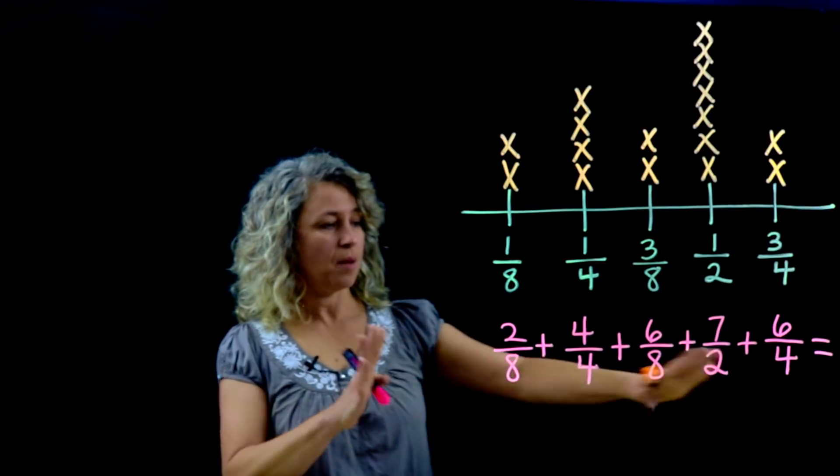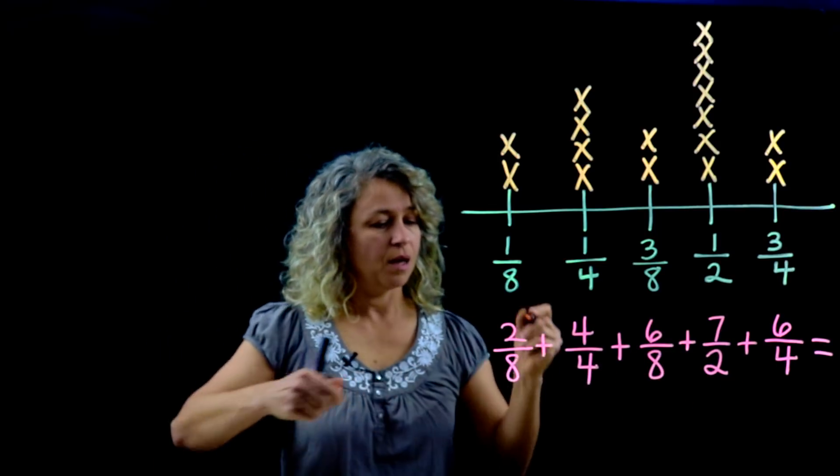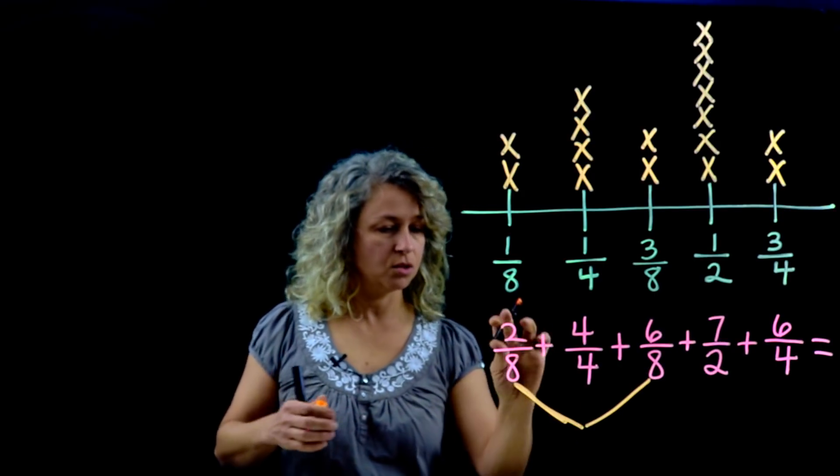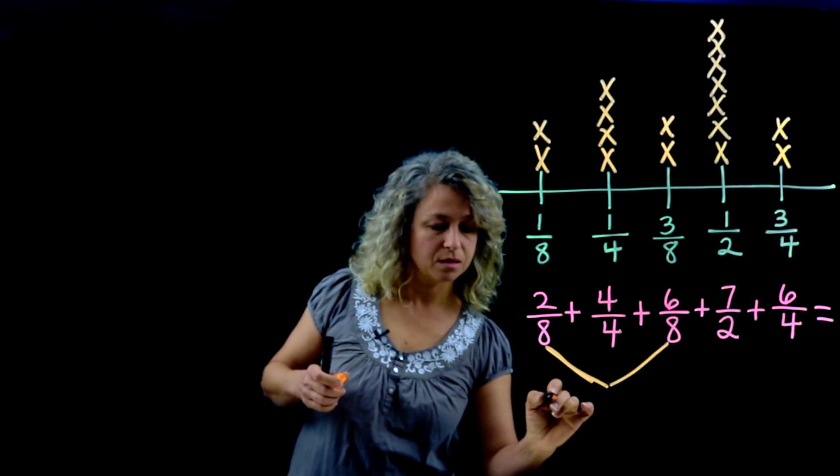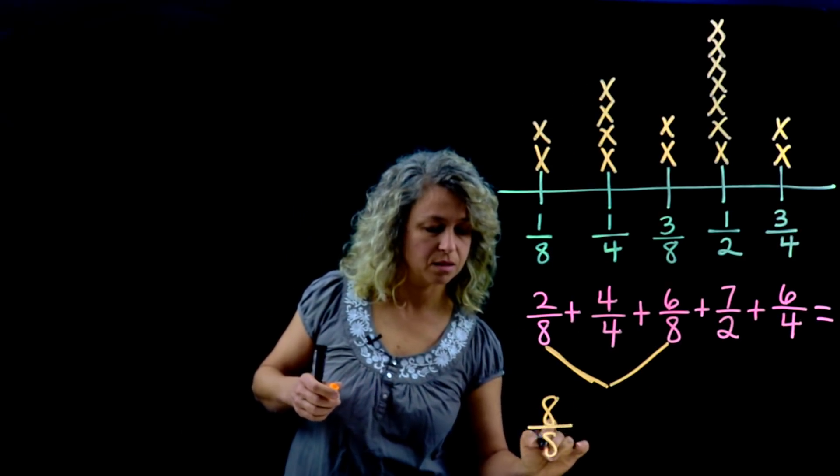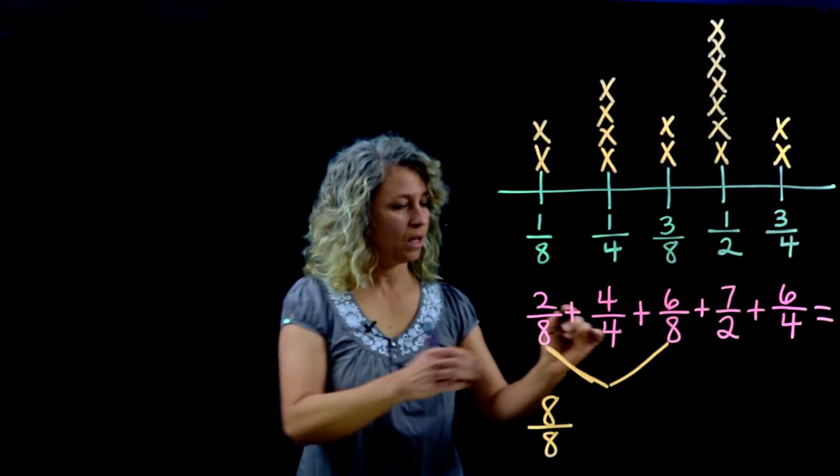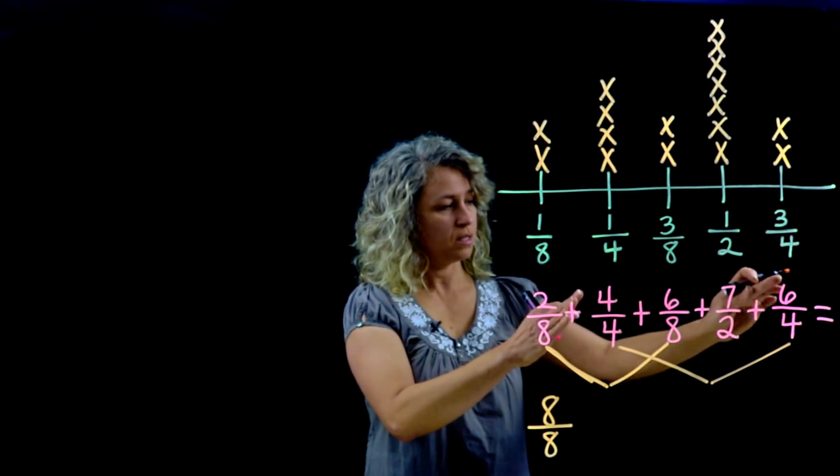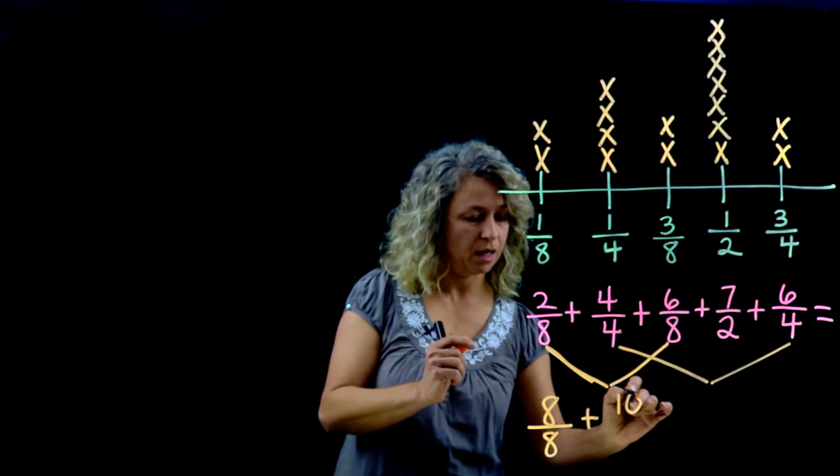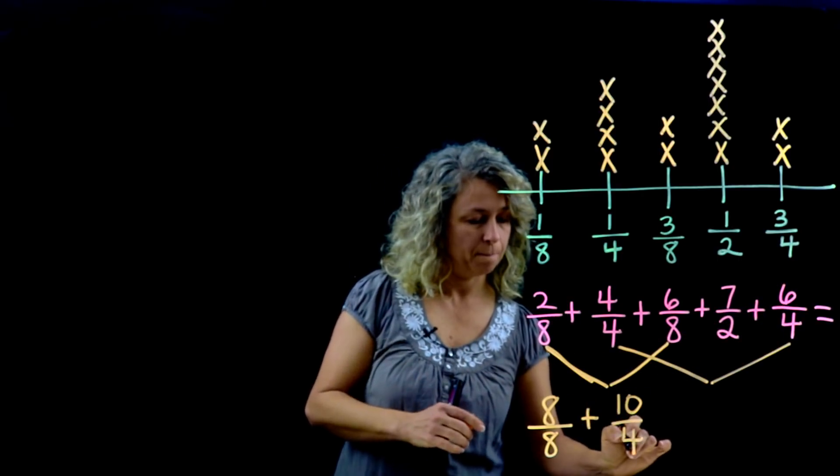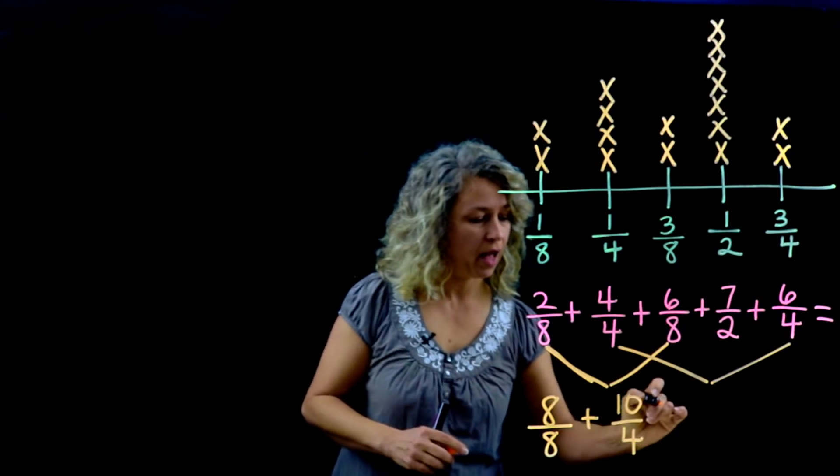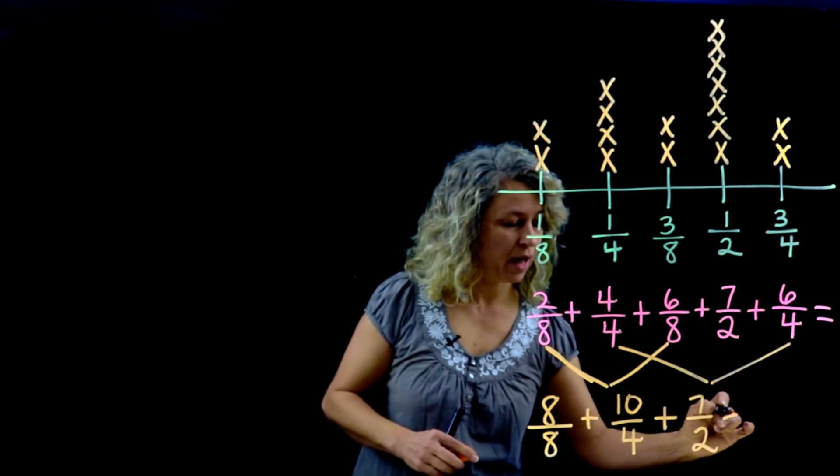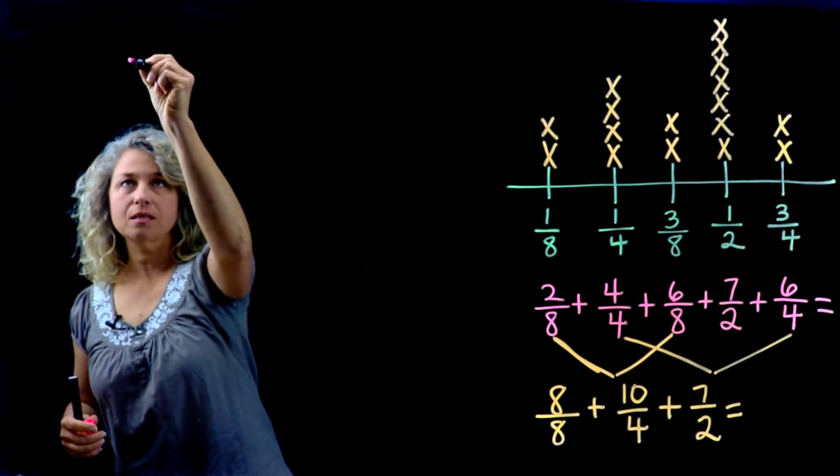Now at this point, I notice that I have some denominators that are the same, and so I can combine like terms. Two-eighths plus six-eighths is eight-eighths. I see that I have some fourths here as well: four-fourths and six-fourths is ten-fourths, and what remains is the seven-halves.